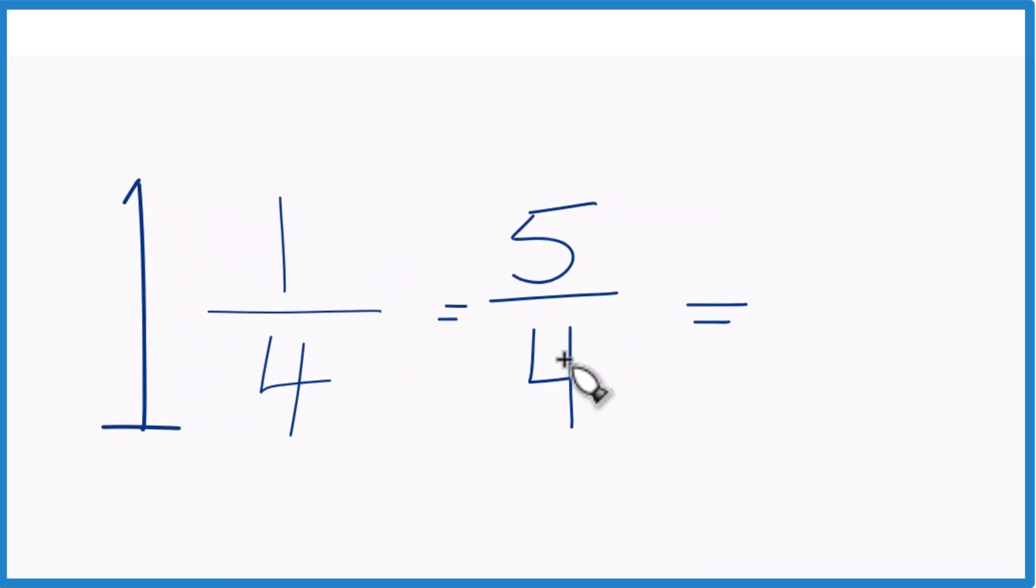We can check our work too because 4 goes into 5 one time with 1 left over. Bring the denominator across. That's what we started with.